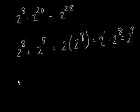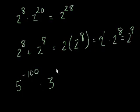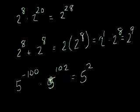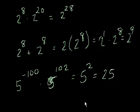This rule works even with negative exponents. For example, 5 to the negative 100 times 5 to the 102 equals 5 squared, because negative 100 plus 102 equals 2. And of course, 5 squared equals 25.